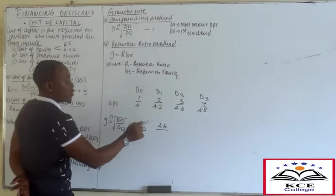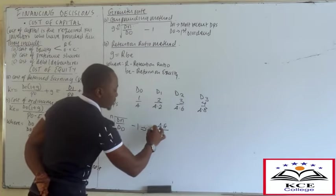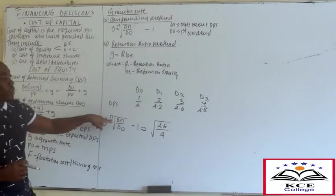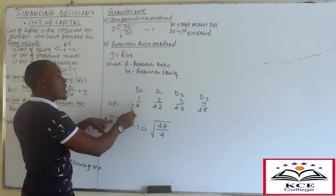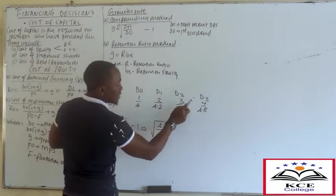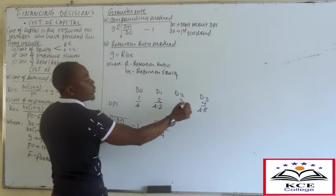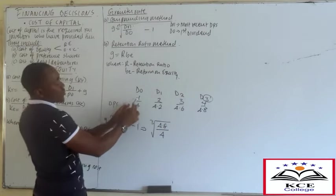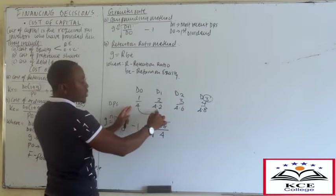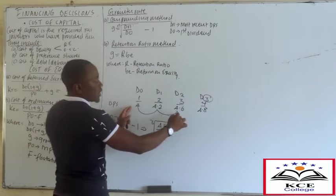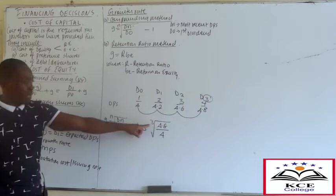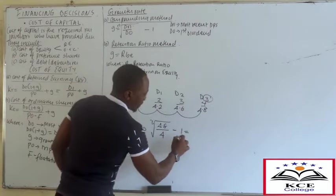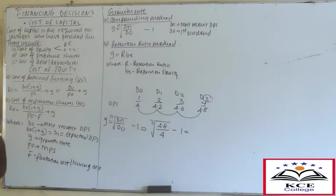When computing the growth rate, d0 is the first dividend. But when computing the cost of capital, d0 is the last or most recent dividend - in this case 4.8 - expected to grow by 5%. Do not confuse the two uses of d0.